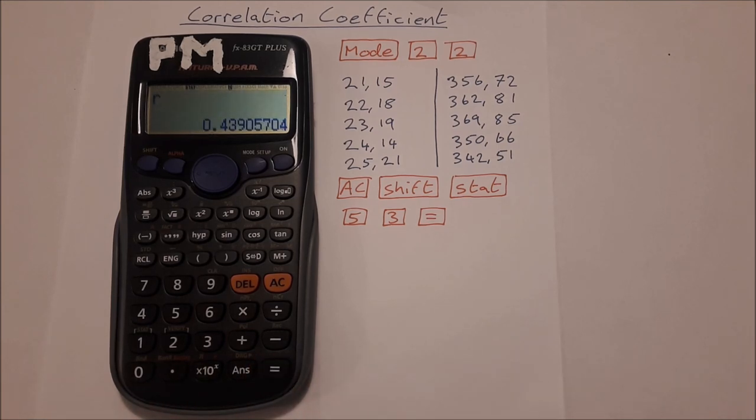And that there is our correlation coefficient for this data: 0.439. The correlation coefficient is always going to be between 1 and minus 1. It can't be any larger than 1, can't be any smaller than minus 1. If it's between 0 and 1, it's positive correlation. If it's between 0 and minus 1, it's negative correlation.